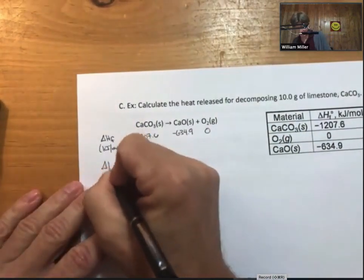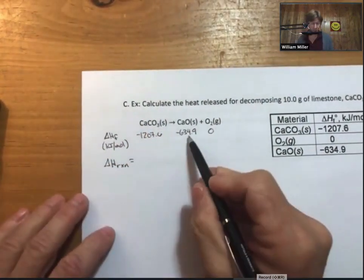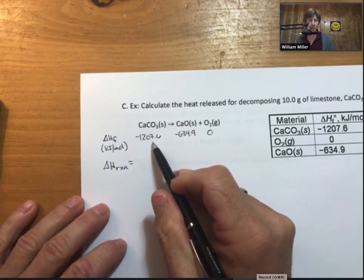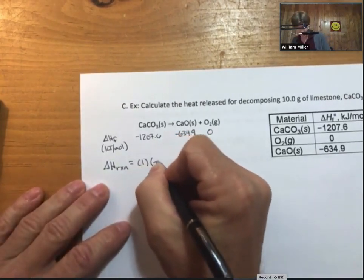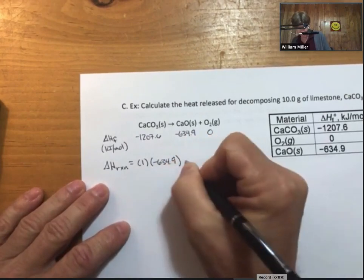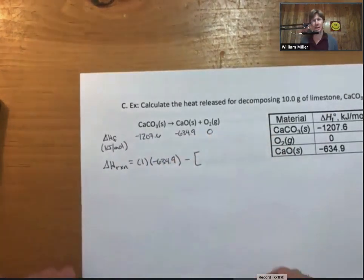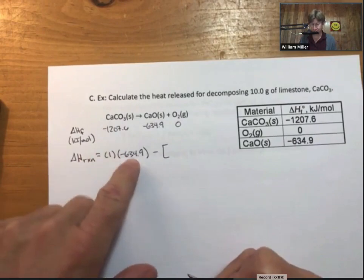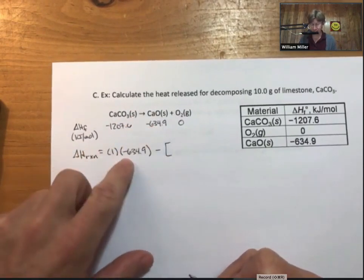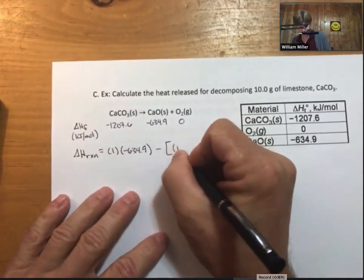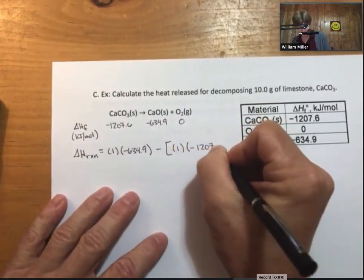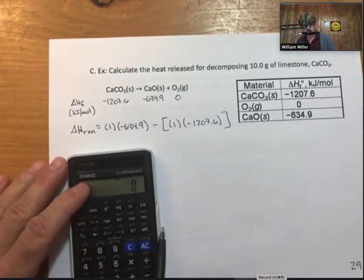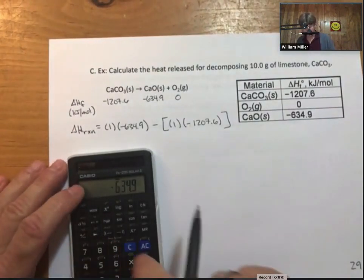Now, calculate delta H reaction. That's going to be products minus reactants, accounting for coefficients, which are all ones in this problem. So, applying the formula for delta H reaction from a previous video. So, we've got minus 1 times the delta HF for the products. Minus the reactants. Times 1. I will omit the math for the ones.